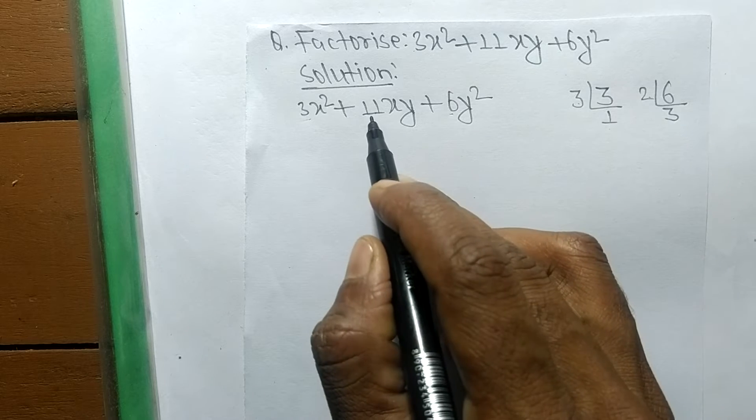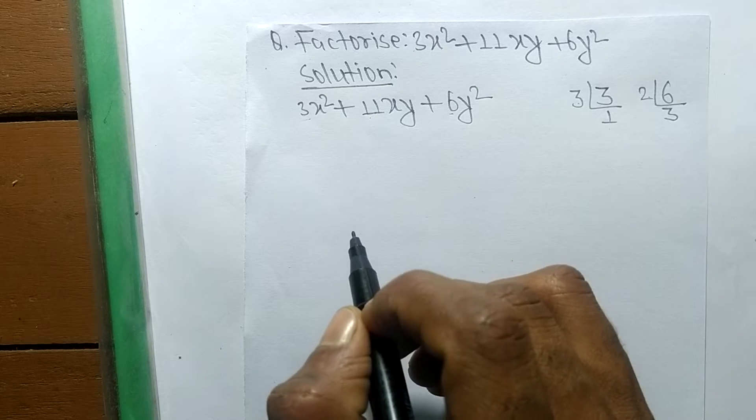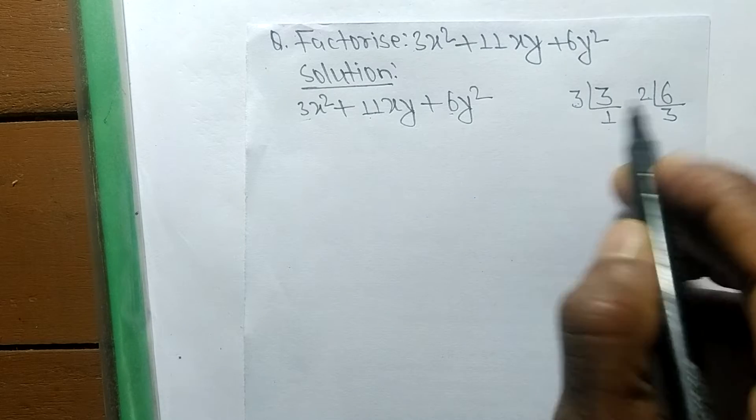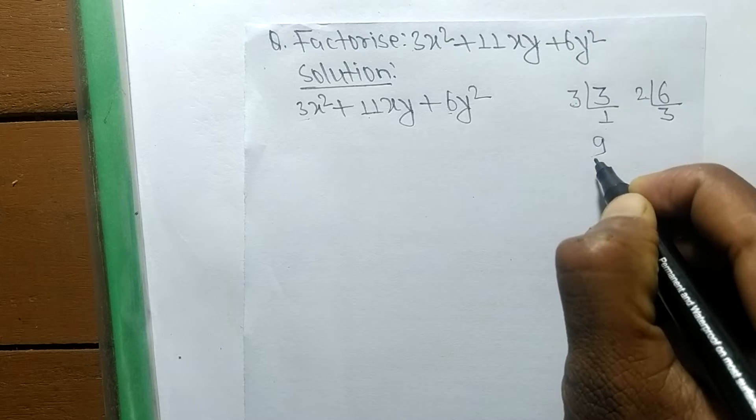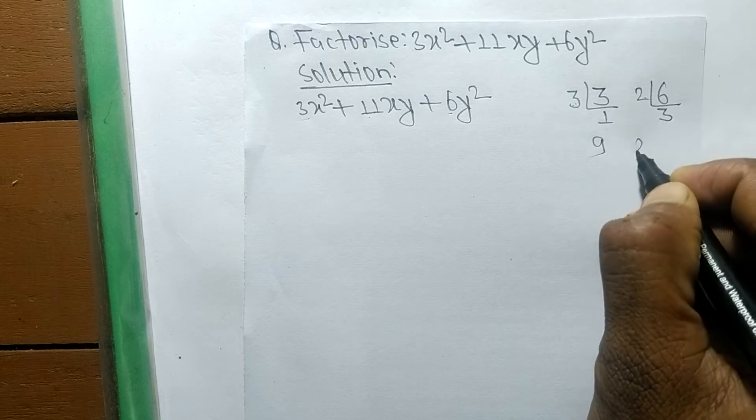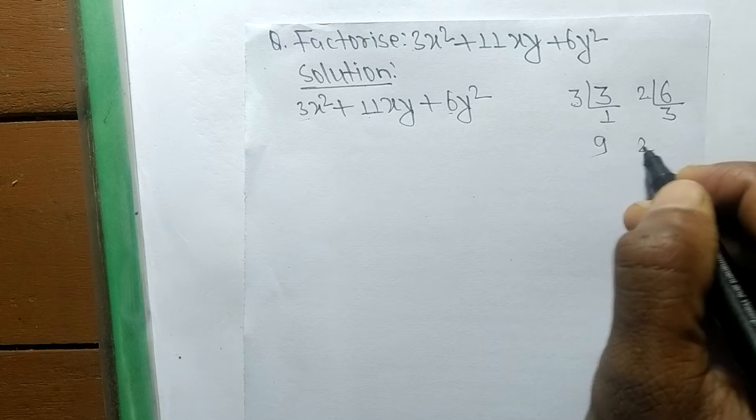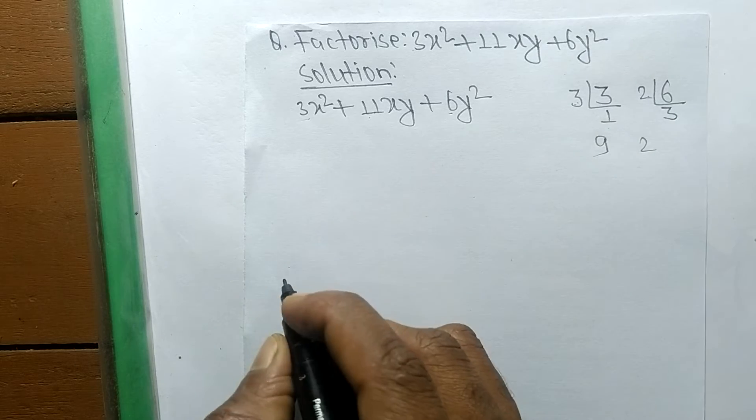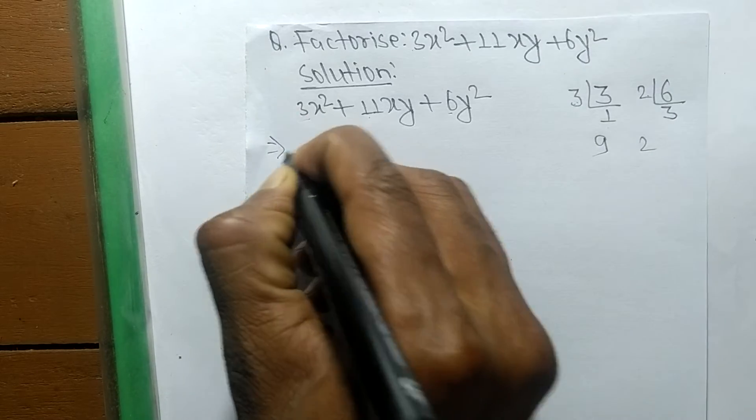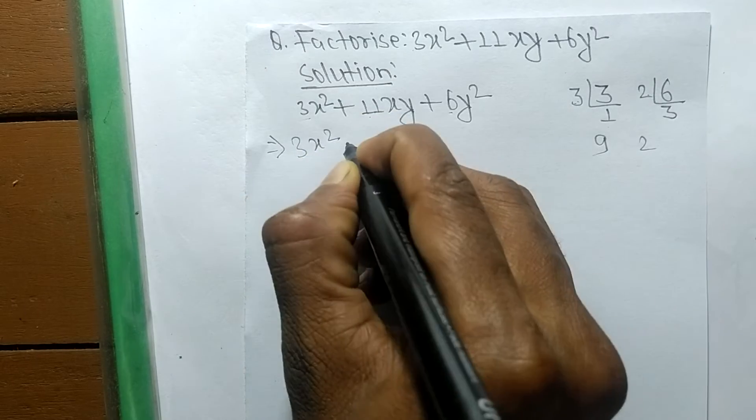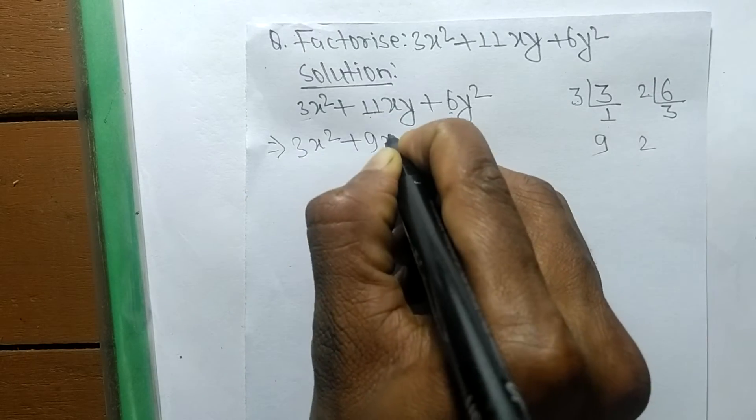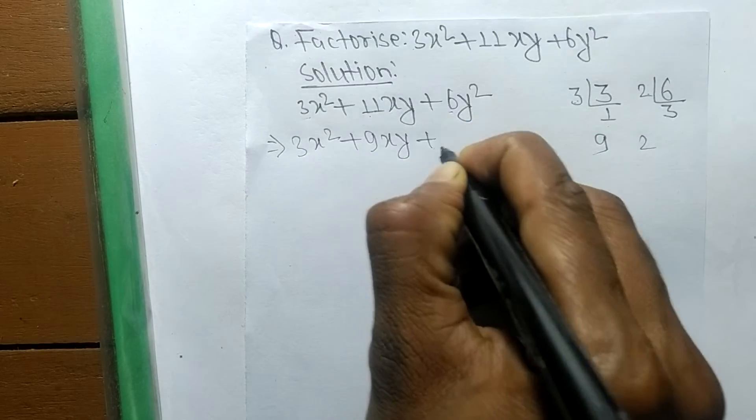We need the result plus 11. When we multiply 3 and 3 we get 9, and 2 times 1 equals 2. So 9 plus 2 equals 11. We can write it as 3x² + 9xy + 2xy + 6y².